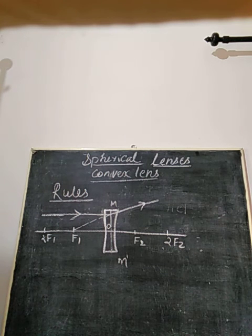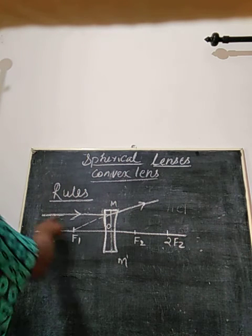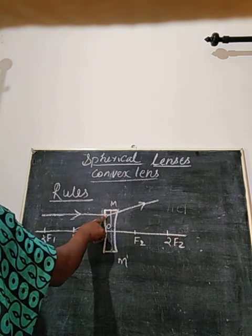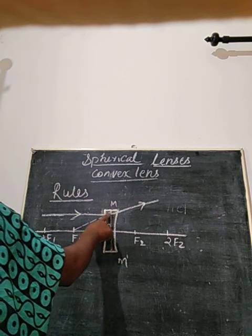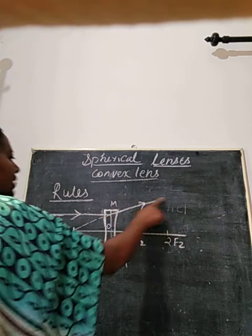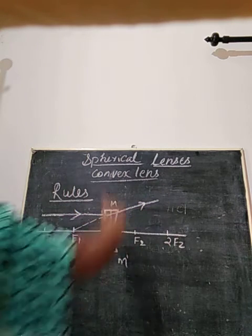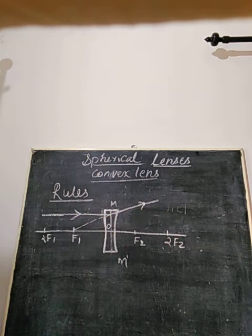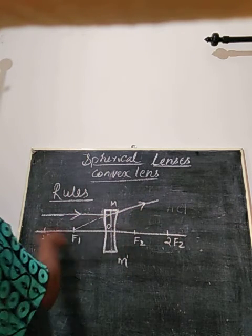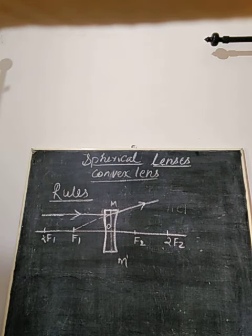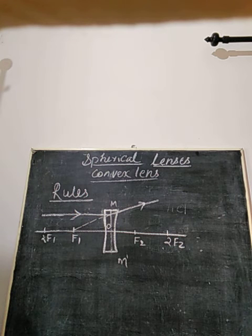So this is the first rule: if a ray is parallel to the principal axis, that ray will undergo refraction and become a divergent ray, but it appears to come from the principal focus f1 of the concave lens.